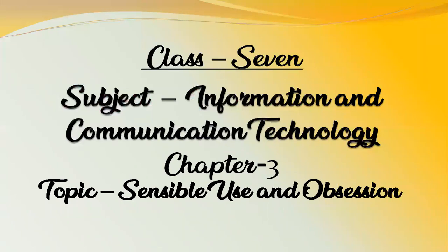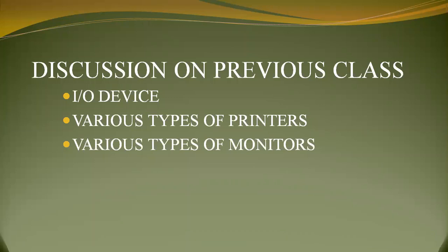Cadets, today's class is Class 7, subject Information and Communication Technology, Chapter 3. Our today's topic is very common and easy — that is sensible use of ICT and obsession. In the last class, the teacher told you in detail about IO devices. Do you know what an IO device is? It is an input-output device. We covered various types of monitors and various types of printers.